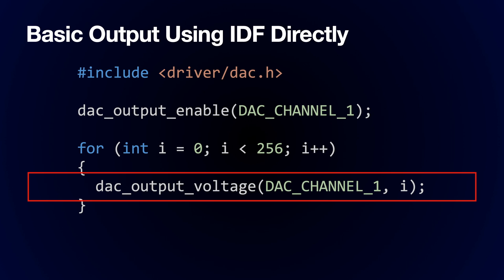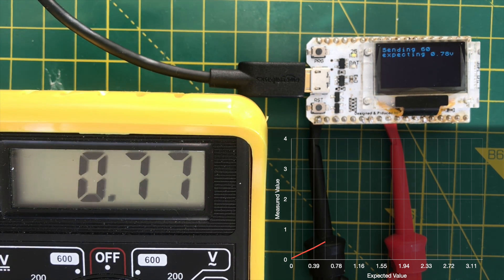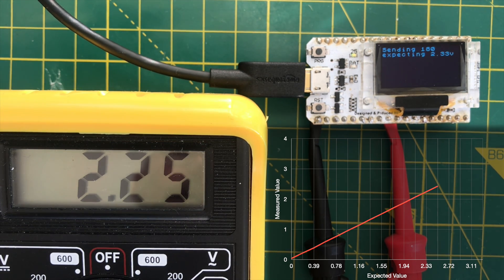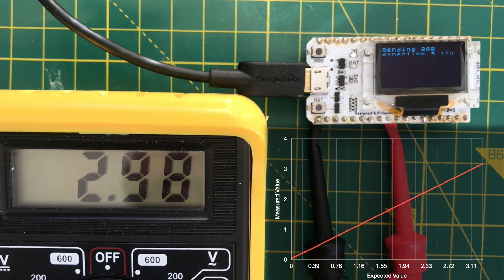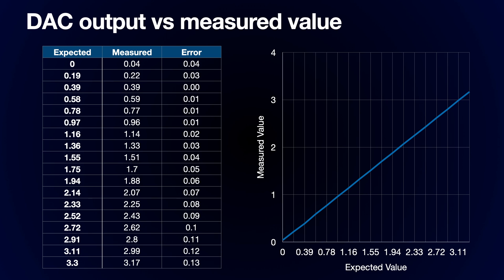Let's have a look at this in action. I've hooked up my multimeter to one of my ESP32 dev boards and I'm slowly stepping up the voltage on the output of the DAC channel. Here you can see a chart of the expected values versus the measured values. There are a couple of things to note: we don't get 0 volts when the output is set to 0 — we get around 4 millivolts.